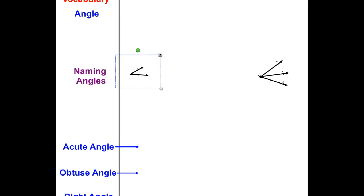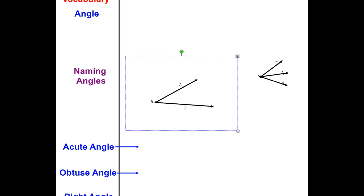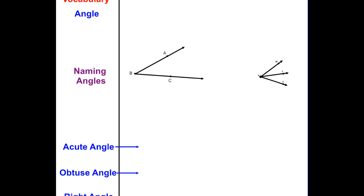To name an angle we need three points. We use the angle symbol, and the first way to name it is angle ABC — notice the shared point B is in the middle. Ray BA and ray BC make angle ABC. We can also name it angle CBA. We cannot do BCA or ACB because A and C are not connected. Since there's only one angle here, we can also just call it angle B.